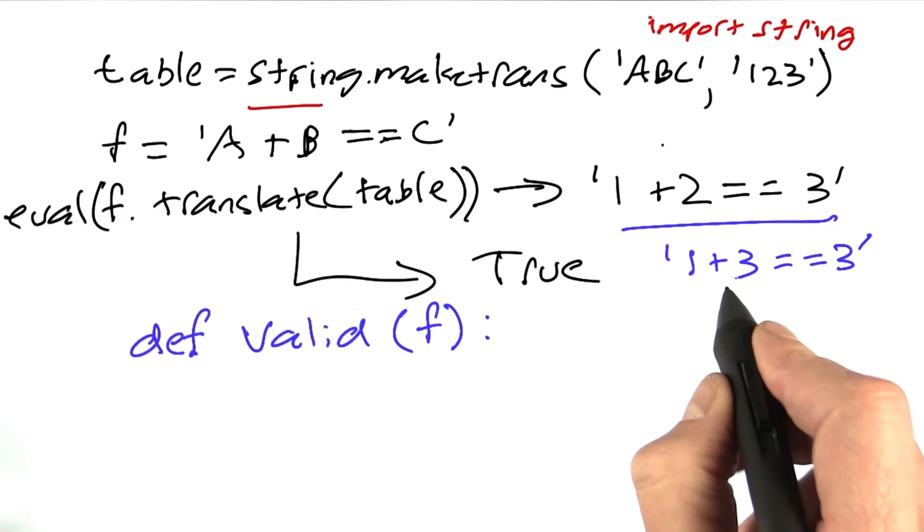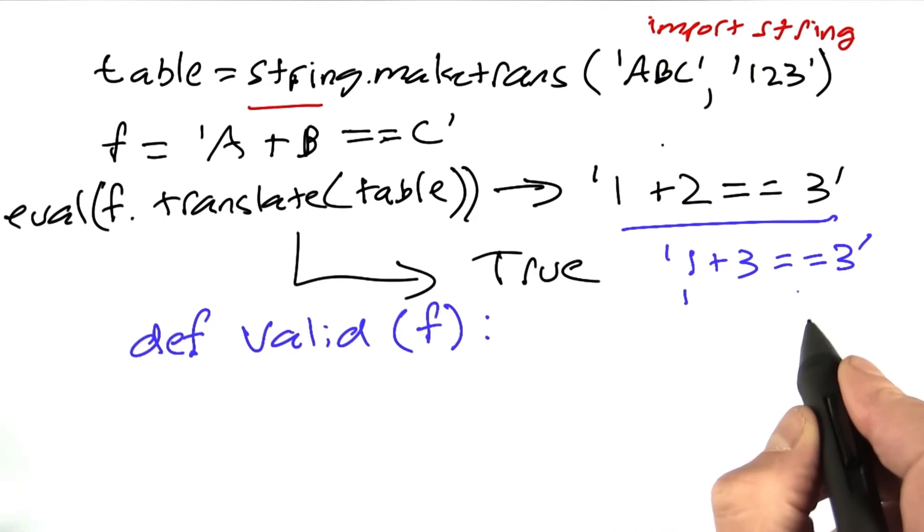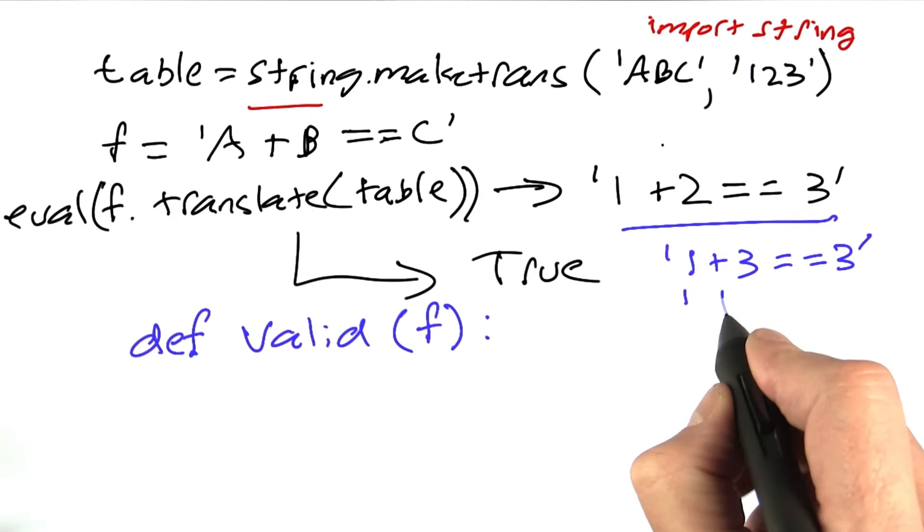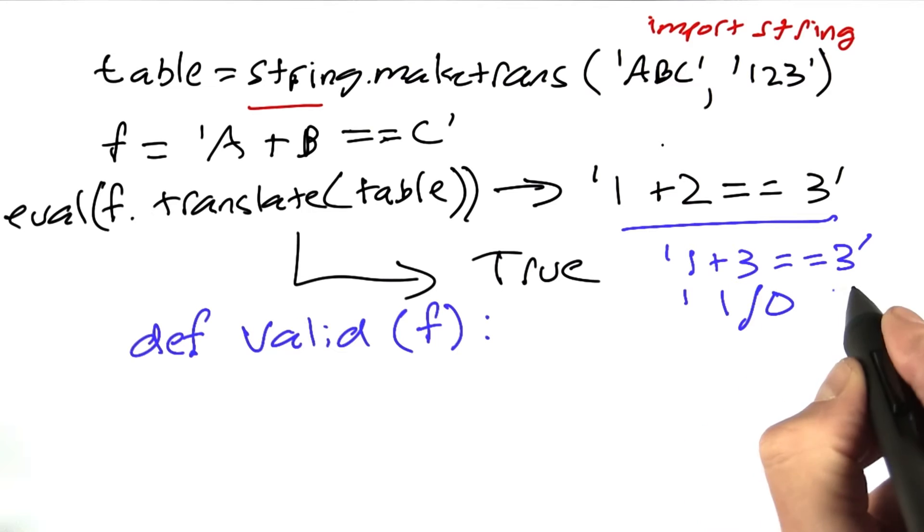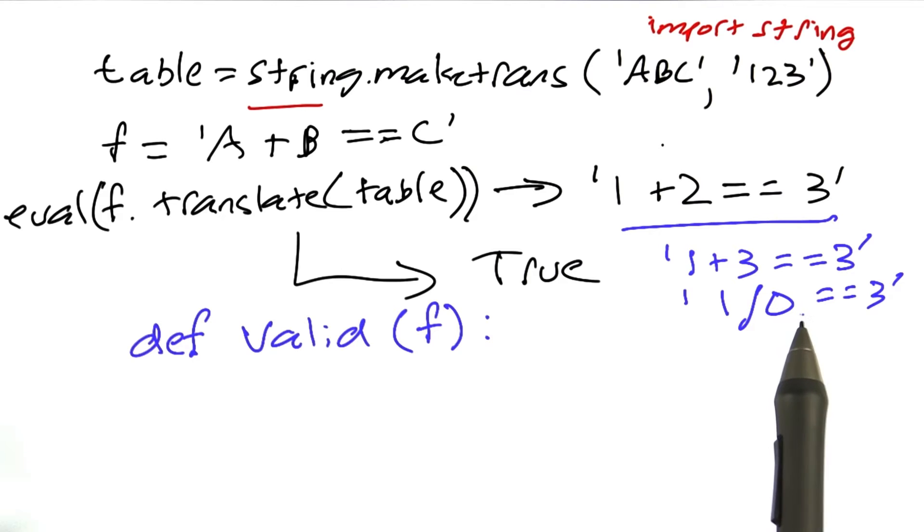Or it should also return false if it represents an error, like 1 divided by 0 equals 3. That wouldn't return true or false. That would signal an error. And I want you to handle that within the code for valid.